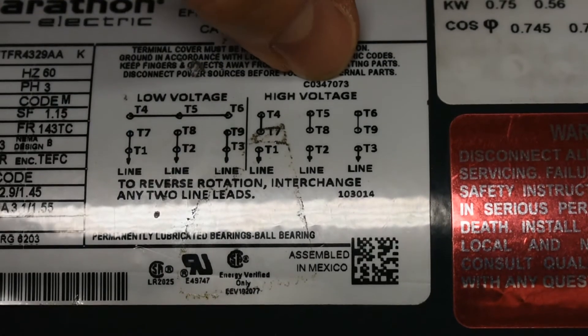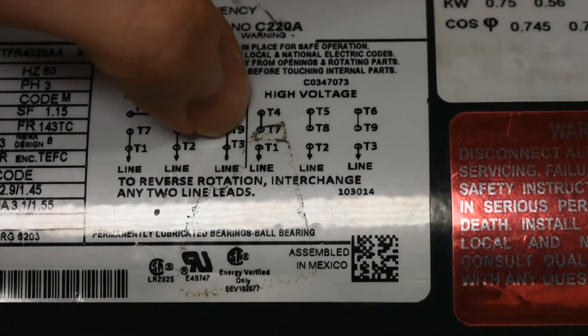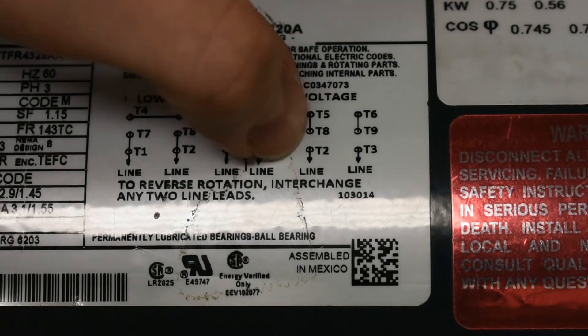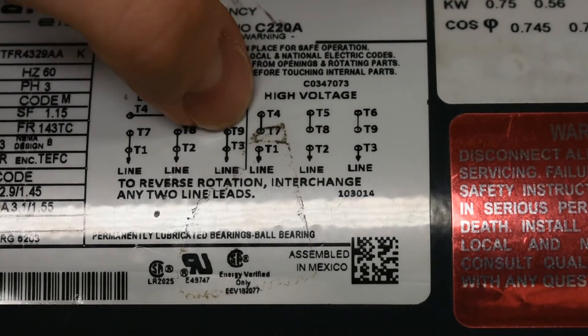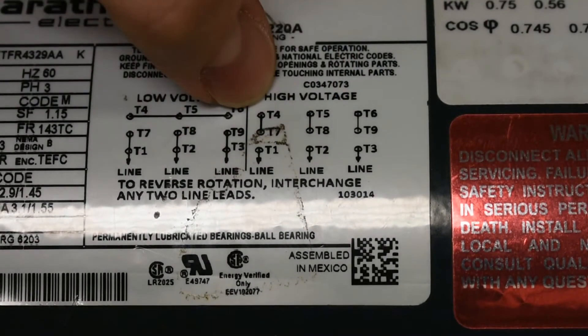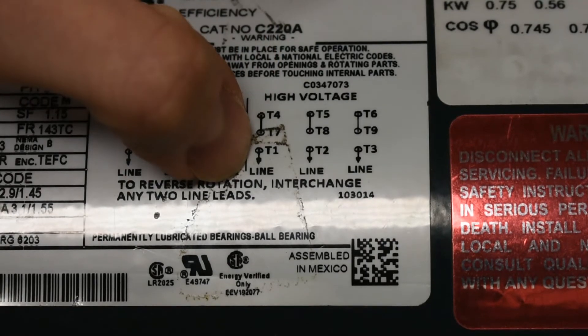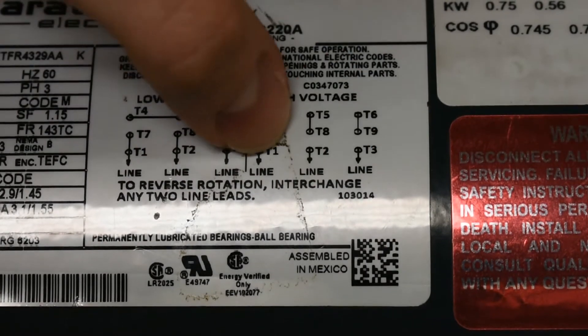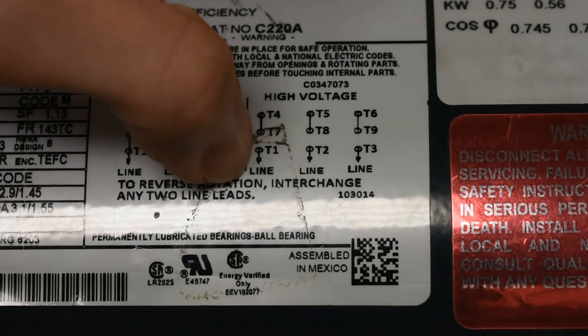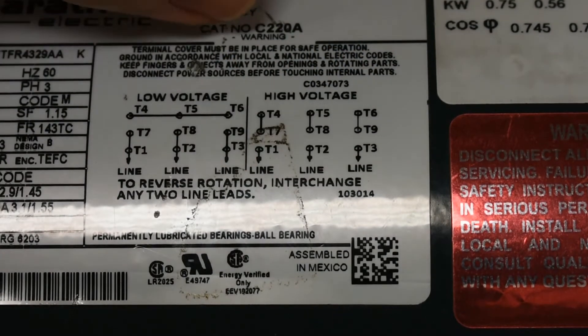Now over here at the high voltage, which means more on the 480 end, we would connect 4 and 7, 5 and 8, 6 and 9. So each one of those sets of wires would have two wires under the wire nut. And then T1, 2, and 3 each going to one of the lines. So again, we're going to have a single wire nut for each one with two wires underneath it.